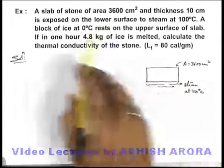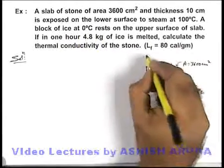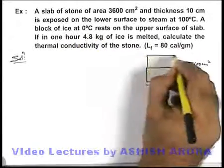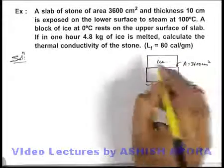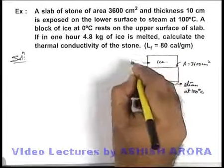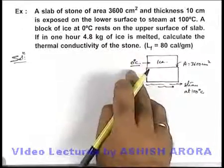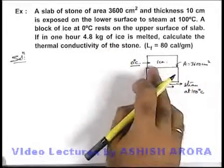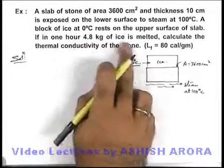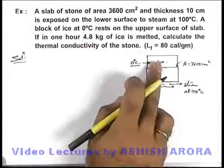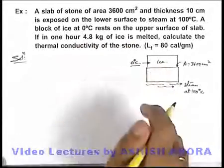A block of ice at zero degree centigrade rests on the upper surface of the slab. On the upper surface we place an ice block, and obviously the ice block will have a temperature of zero degree, which is given to us. It is stated that in one hour, 4.8 kilogram of ice is melted. We are required to find the thermal conductivity of the stone.